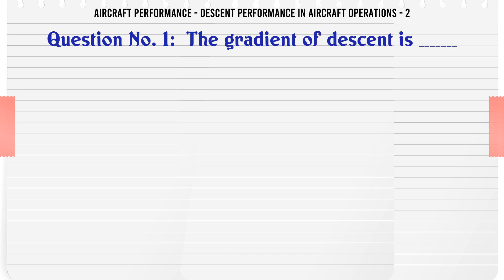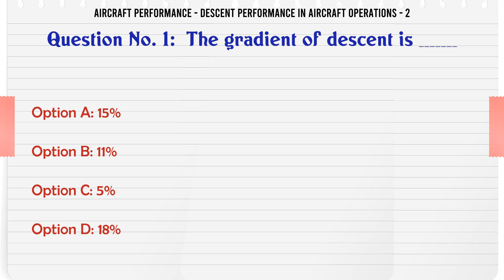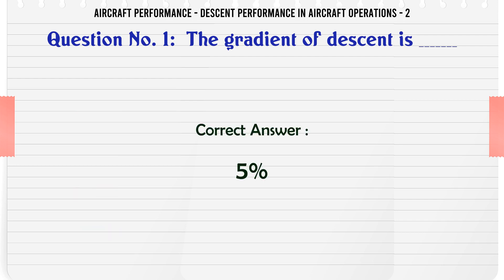The gradient of descent is: a) 15, b) 11, c) 5, d) 18. The correct answer is five.